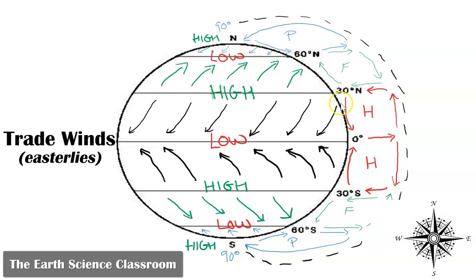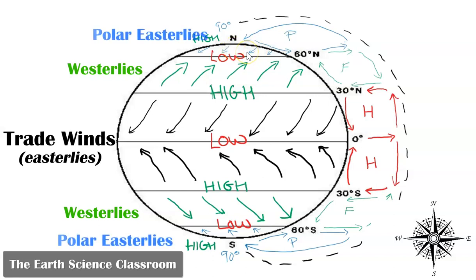Now the winds that go from 30 north to 60 north and the same in the southern hemisphere, for the Ferrel cell, these are called the westerlies because they start in the west and move to the east. They are named from where they start from. So they are called the westerlies.